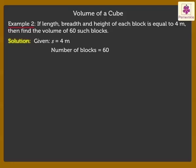Firstly, let us find the volume of one block, which is equal to side cubed, which is equal to 4 into 4 into 4, which is equal to 64 cubic metres.